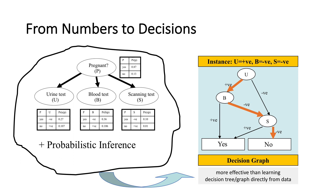The decision graph is a generalization of the decision tree in the sense that you can have shared portions, which means the decision graph could be exponentially smaller than a decision tree — a more compact representation. Specifically, this is what we call an ordered decision diagram, meaning features are tested in the same order across any path. This is important because it makes the graphs tractable — many queries can be answered very efficiently. Our approach compiles Bayesian networks into these graphs; while you could learn decision trees directly from data, it's better to learn a probabilistic model and then compile it.